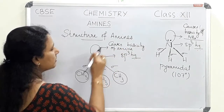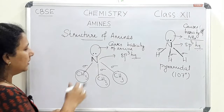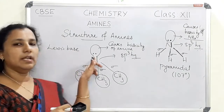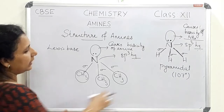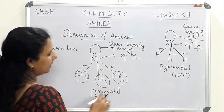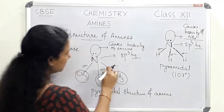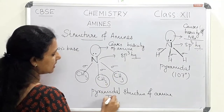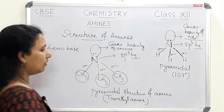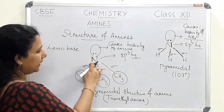The basicity of amines is due to the presence of lone pairs of electrons, so amines are Lewis bases. In this case also the structure is pyramidal. This pyramidal structure is illustrated by trimethylamine, which is a tertiary amine. Here nitrogen is sp3 hybridized.